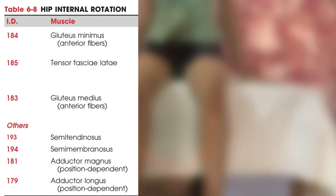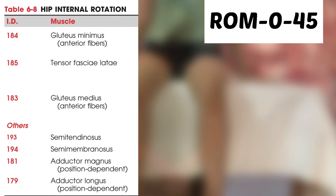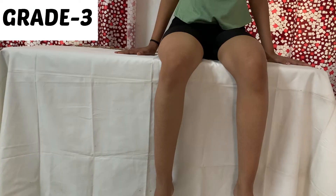Next is hip internal rotation MMT. The muscles that perform hip internal rotation are gluteus minimus (its anterior fibers), TFL, gluteus medius (its anterior fibers), and other muscles such as semitendinosus, semimembranosus, adductor magnus, and adductor longus.